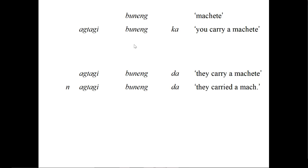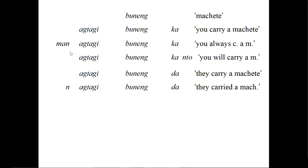Now that we know ka means 'you' and da means 'they,' we can look at nag tagi buneng da. Going from 'they carry a machete' with ag tagi buneng da to 'they carried a machete' with nag tagi buneng da — the difference is the n sound at the start, and the meaning shifts to past tense. So if there's an n sound at the start, we know it's past tense. And up here, man ag tagi buneng ka, where man means 'always.'